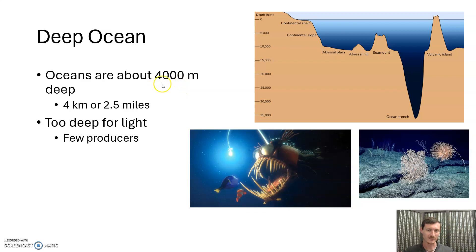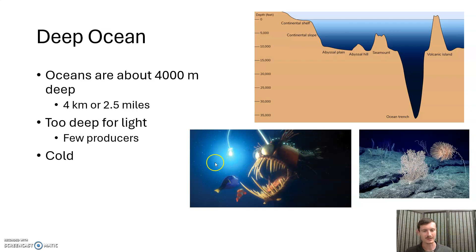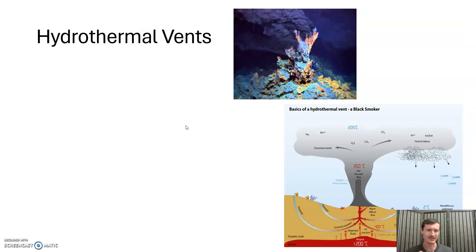Deep ocean is going to be the last marine zone. Oceans are about 4,000 meters — four kilometers, about 2.5 miles — deep. The deepest ocean is about 11 kilometers in the Marianas Trench. There are seamounts, which are underwater volcanoes — Hawaii is one example. The abyssal plain is the flat bottom of the ocean. There's no light down here, so there's not a lot of production. Things that learn to exist in the cold with no light — like our angler fish — tend to be slow growing, weird, blind, and unique, just like cave life.